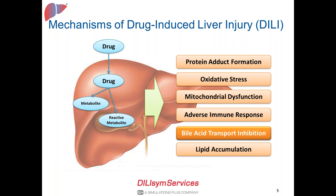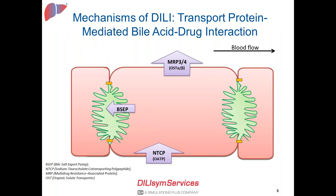The focus of today's talk will be bile acid transporter inhibition. This figure shows a schematic of a single hepatocyte with localization of different bile acid transporters. Bile acids are mainly taken up into the liver by NTCP transporters, and unconjugated bile acids are also taken up by OATP transporters. Once within the liver, the bile acids are predominantly excreted into bile through the bile salt export pump, the BSEP transporter. They can also be transferred back to the sinusoidal blood through basolateral efflux transporters such as MRP3, MRP4, or OSTα/β.